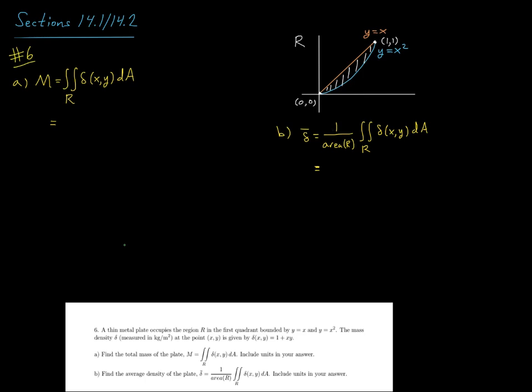All right, next up is question 6. It says a thin metal plate occupies the region R in the first quadrant bounded by y equals x and y equals x squared.